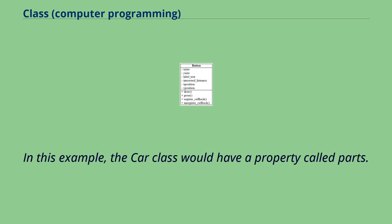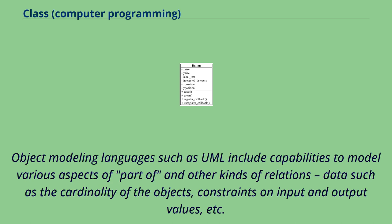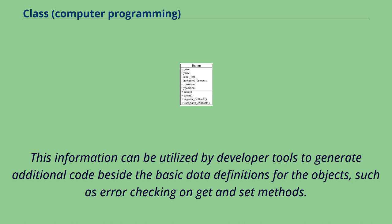In object-oriented modeling, these kinds of relations are typically modeled as object properties. The car class would have a property called 'parts', typed to hold a collection of objects such as instances of body, engine, tires, etc. Object modeling languages such as UML include capabilities to model various aspects of part-of and other kinds of relations, such as the cardinality of the objects, constraints on input and output values, etc. This information can be utilized by developer tools to generate additional code, such as error checking on get and set methods.